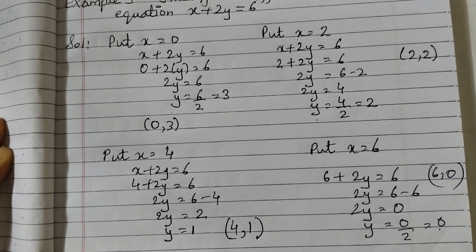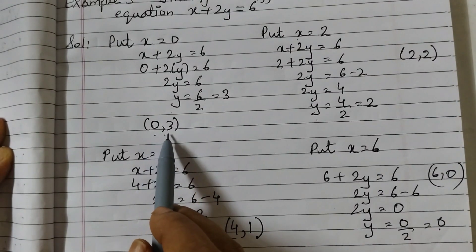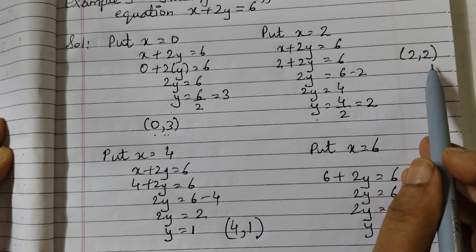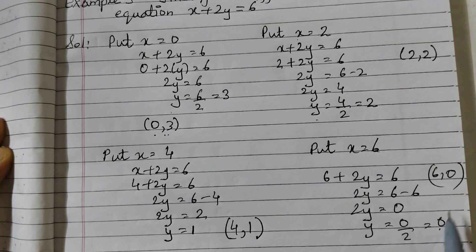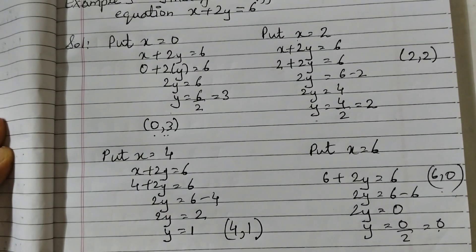So the 4 solutions we got is 0 comma 3, 2 comma 2, 4 comma 1 and 6 comma 0. I hope this is clear to all. Thank you.